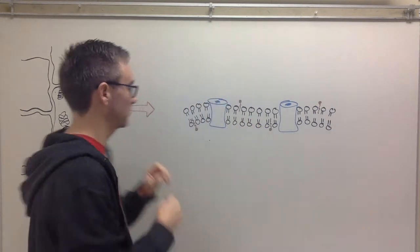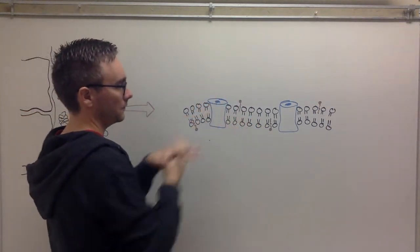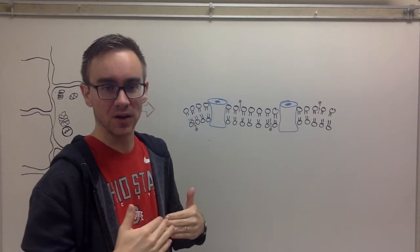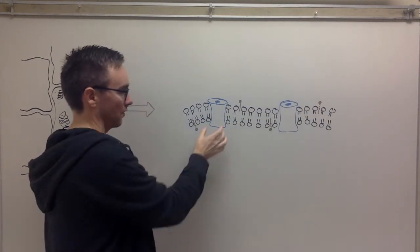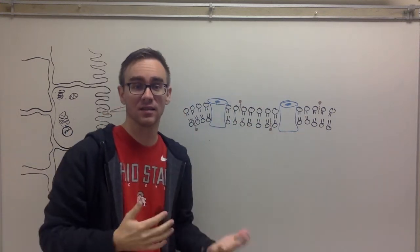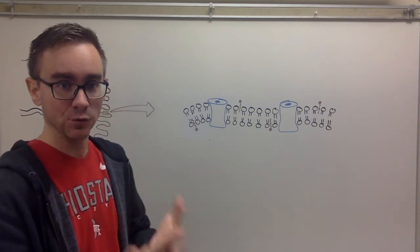Anyway, so then we kind of zoom in onto one of those parts of the membrane. We have that phospholipid bilayer, two phospho or two rows of phospholipids, right? We have our embedded proteins. And then we have some other, remember that phospholipid bilayer has lots of things in it like cholesterol to add fluidity.